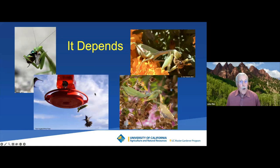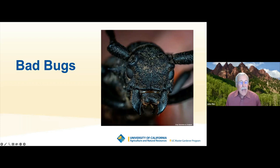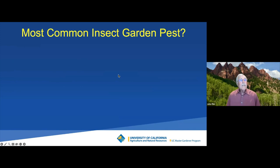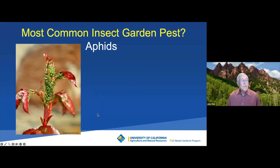But now I'm going to talk about ones that I consider black or white — the bad bugs. These are the common pests that you have had, or likely will have this summer in your garden. What do you think the most common insect garden pest is? I'll bet 75% of you are saying aphids — and you're absolutely right. That's probably the most common insect garden pest we have.